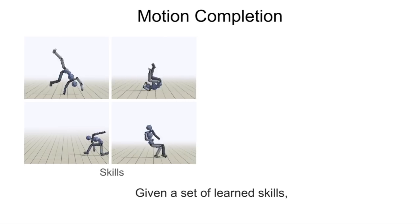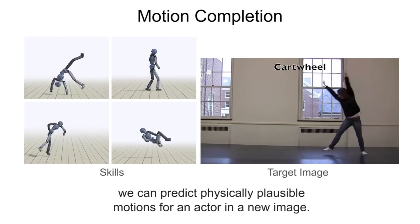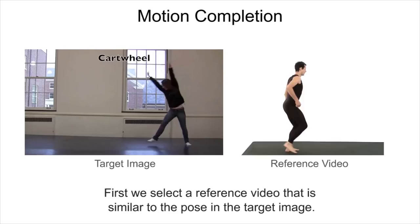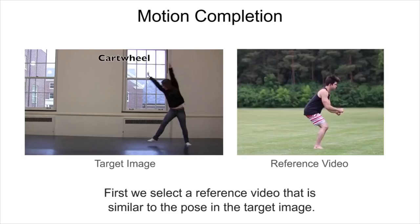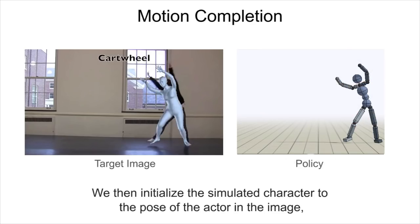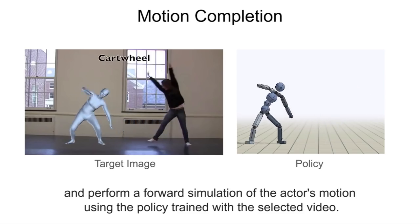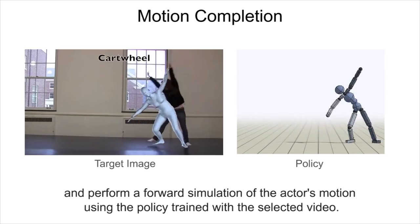Given a set of learned skills, we can predict physically plausible motions for an actor in a new image. First, we select a reference video that is similar to the pose in the target image. We then initialize the simulated character to the pose of the actor in the image, and perform a forward simulation of the actor's motion using the policy trained with the selected video.